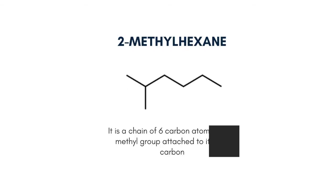Next is 2-methylhexane, which is a chain of 6 carbon atoms with a methyl group attached to its second carbon. It is the result of taking one of the carbons out and attaching it to the second carbon as a methyl group, thus the name 2-methylhexane.